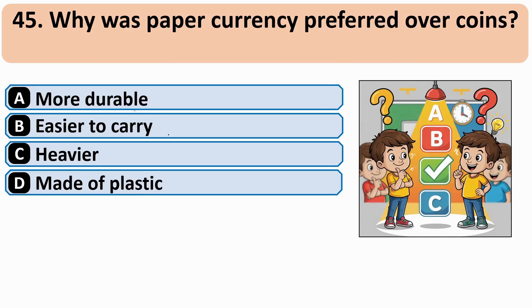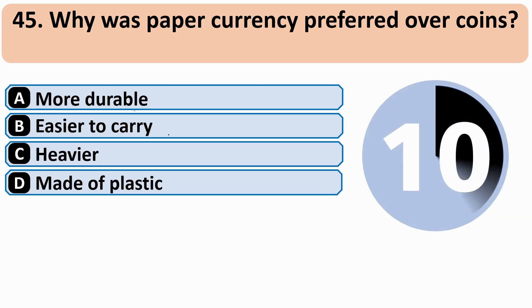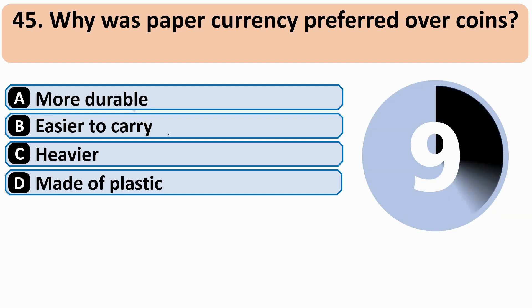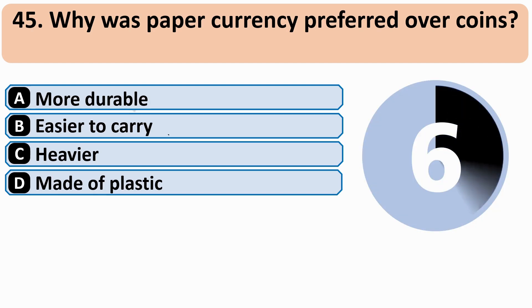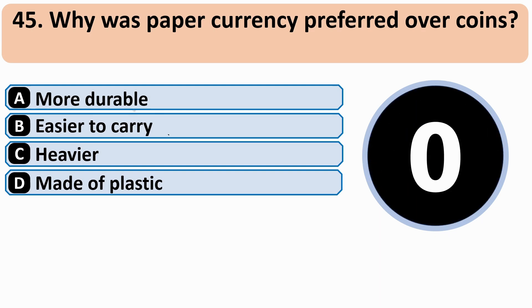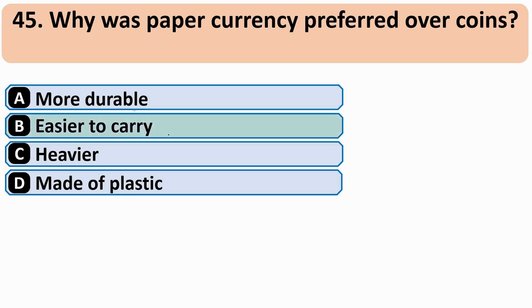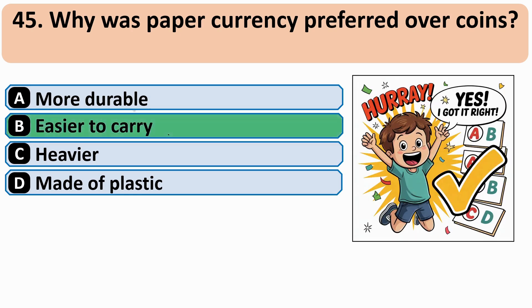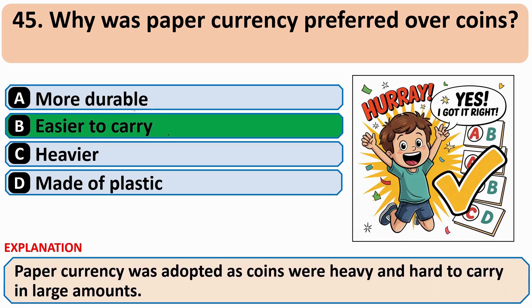Why was paper currency preferred over coins? The correct answer is B — Easier to carry.